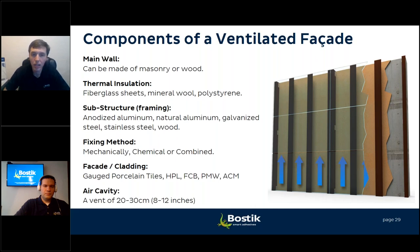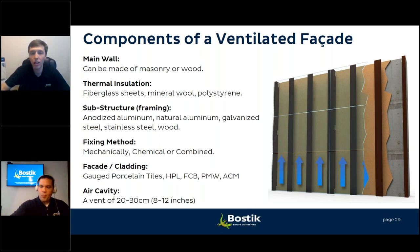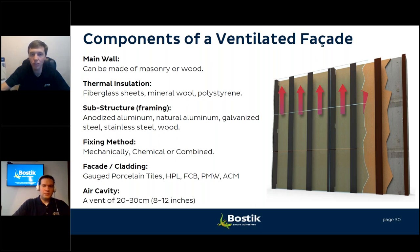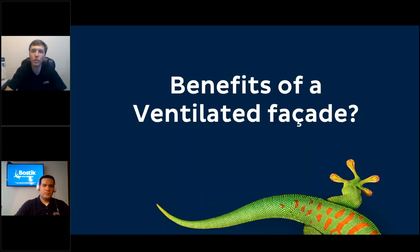Behind the cladding material is an air cavity where cool air enters at the bottom, rises through the vent, and warms and neutralizes the air touching the outside of the building. This is where the energy efficiency benefit comes from. The air cavity is generally 20 to 30 centimeters (roughly 8 to 12 inches), with air telegraphing from bottom to top through the open vent.